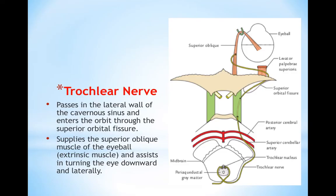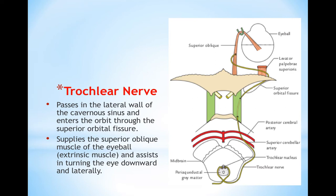Next we have the trochlear nerve, which is the fourth cranial nerve. This nerve also passes through the lateral wall of the cavernous sinus. It is responsible for the innervation of one of the extra-ocular muscles, which is the superior oblique muscle, responsible for turning the eye downward and laterally. The oblique muscles of the eye have actions opposite to their names; the superior oblique causes downward movement, and both oblique muscles turn the eye laterally.